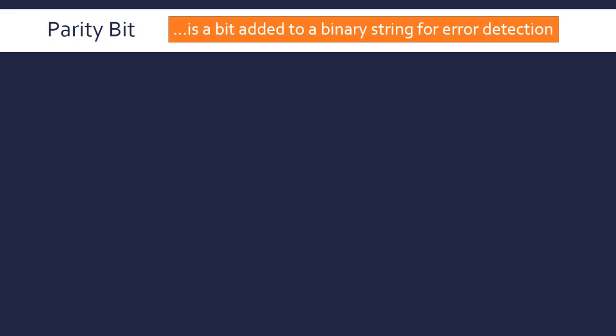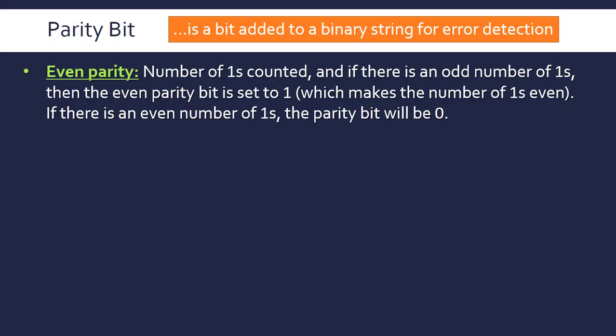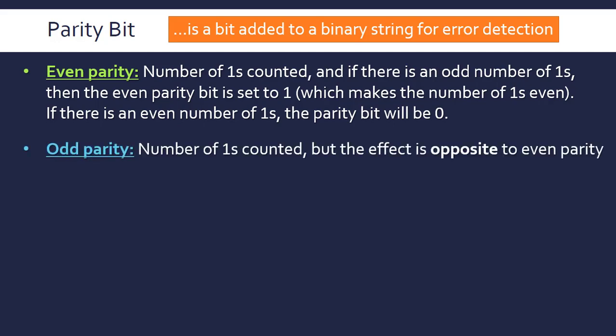This makes more sense once we look at parity bits. These are bits—or just a bit—added to a binary string for error detection. There are two ways to do this. An even parity bit is where you count the number of ones. If the number of ones counted is odd, then the even parity bit is set to 1, making the total number of ones even. If there's already an even number of ones, you set the parity bit to 0 so it remains even.